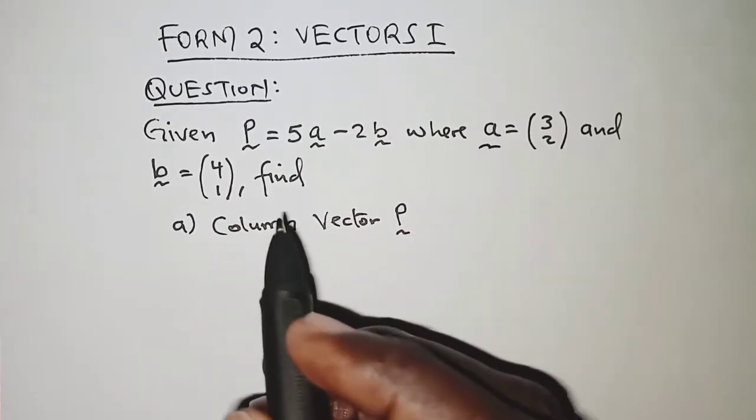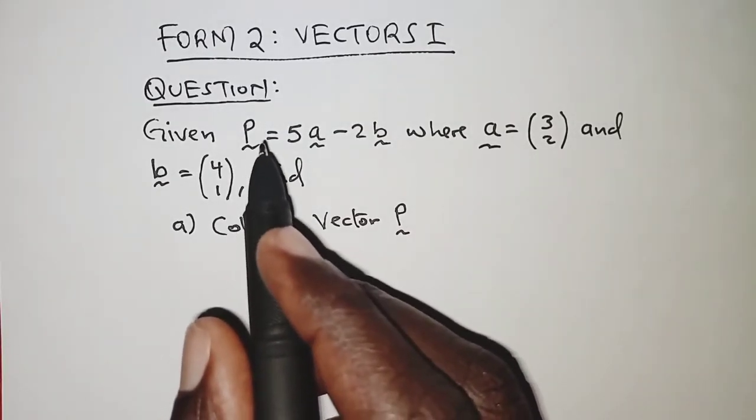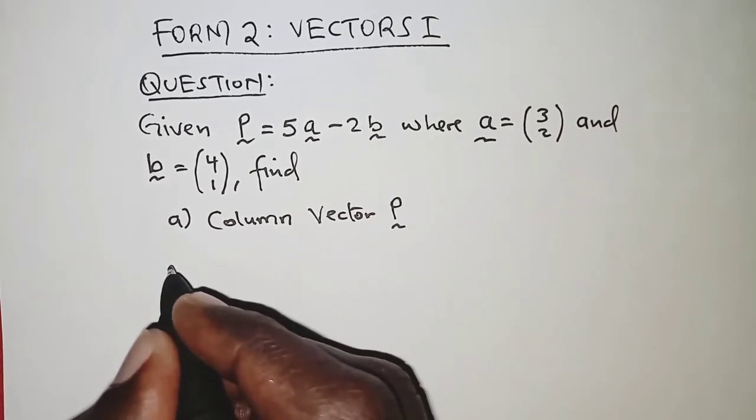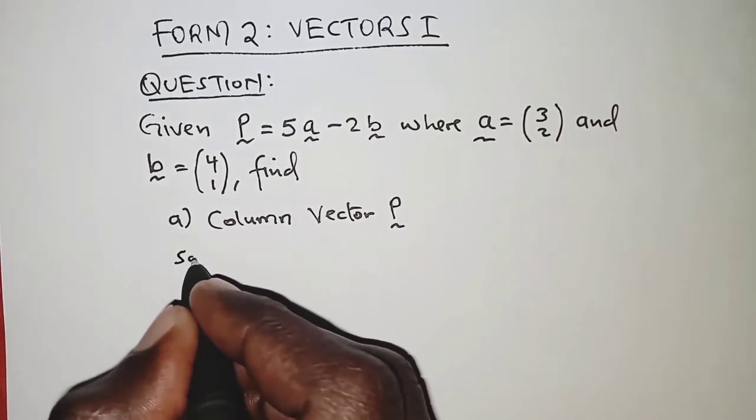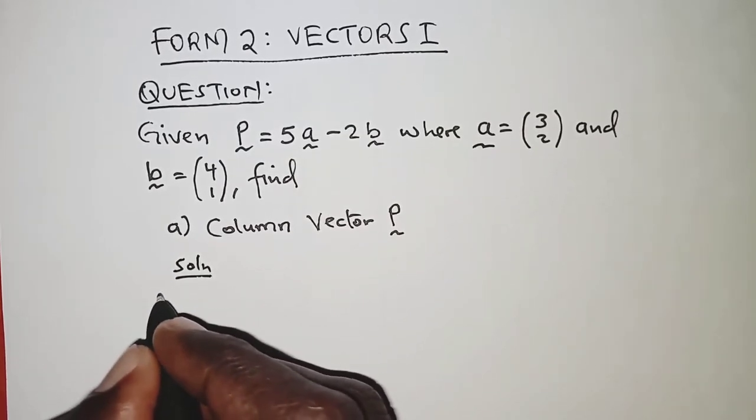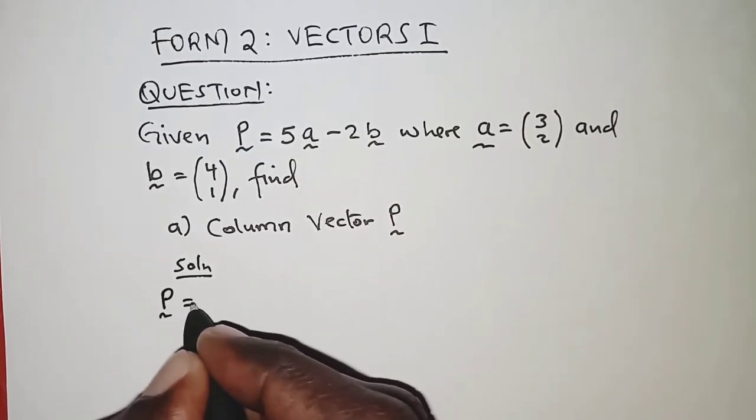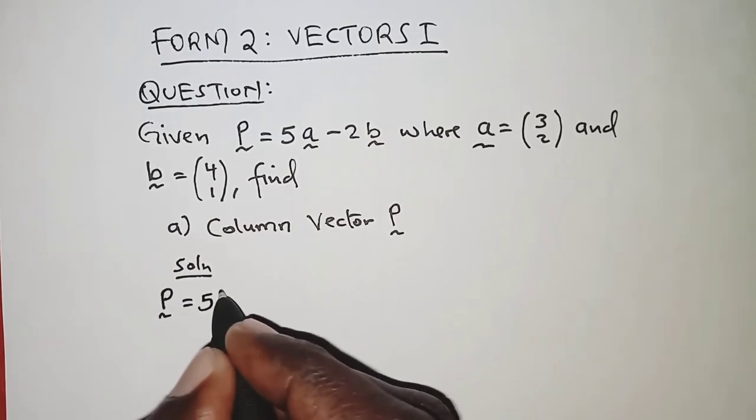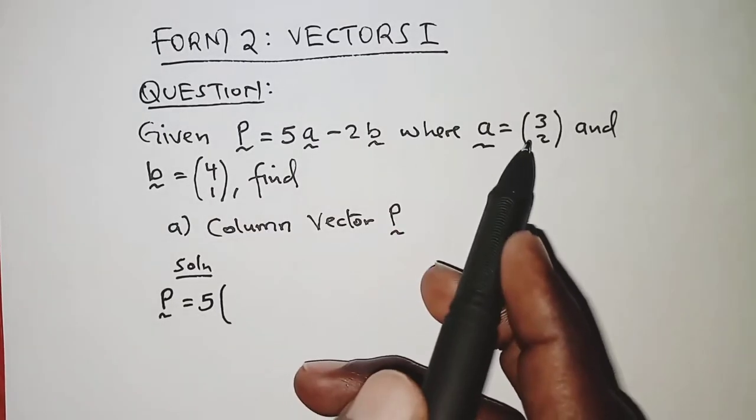So, from what we have right up here, P is equal to 5 into A, but A is (3, 2).